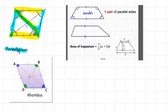Another shape we learned is the trapezium. There is only one pair of parallel lines. Something interesting about this: when you extend the non-parallel lines, the angle outside here is equal to the angle inside this portion here. Likewise, this angle over here is equal to the angle over here.